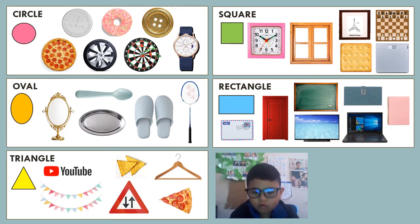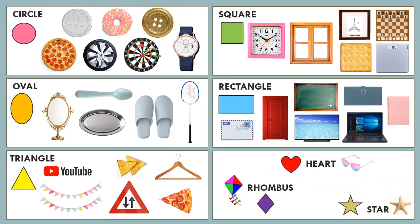These are just some of the 2D shapes around us. And there are many more 2D shapes like the rhombus, the heart, and the star. As we already know, 2D shapes are flat.